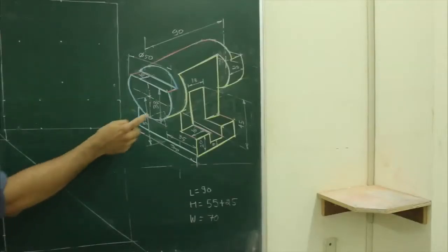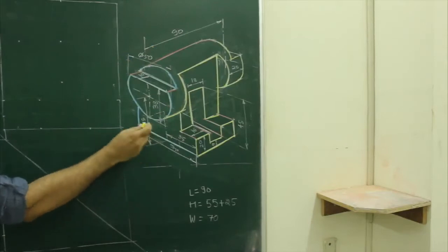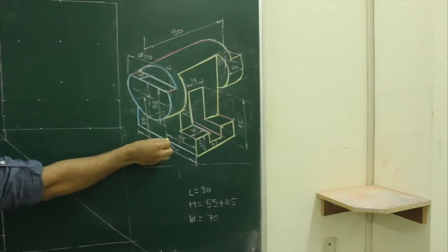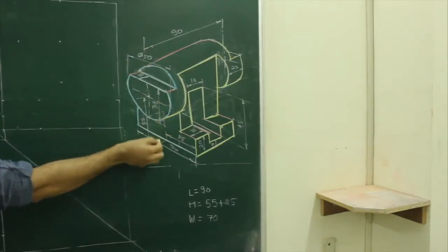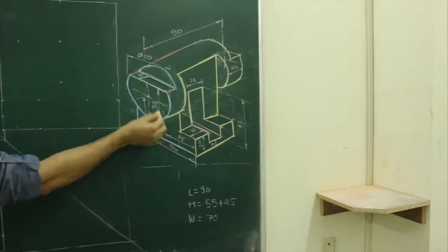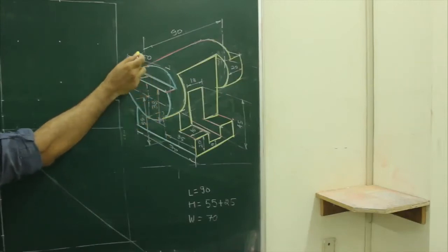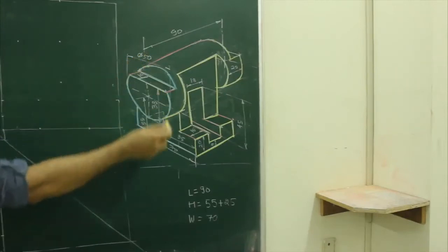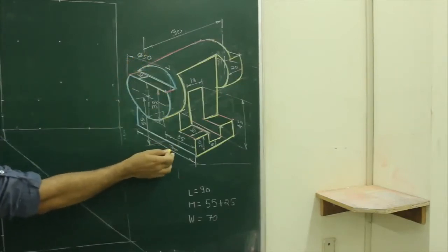The given dimensions are: length is 90, height is 55 — that is from center to center — and 25 because diameter is 50, and width is 70.